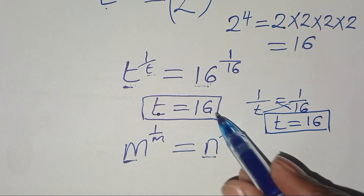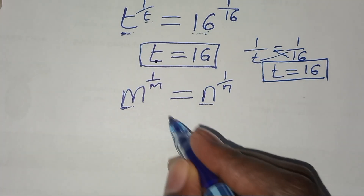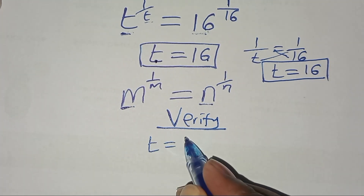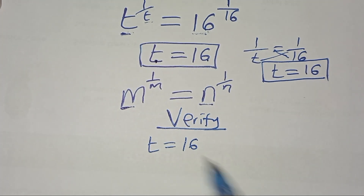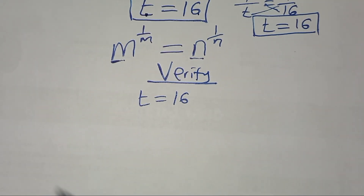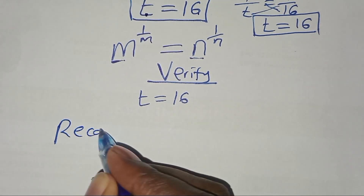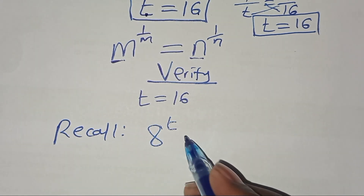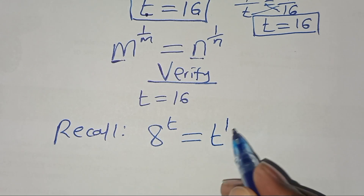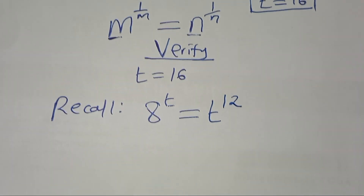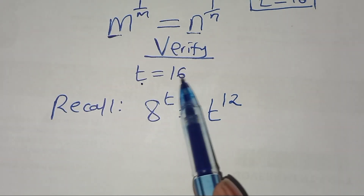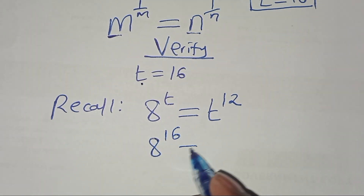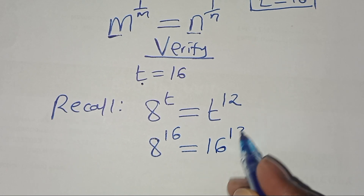So we have the value of t as 16. Let's verify that t equals 16 actually satisfies the original equation. Recalling that 8 to the power t is equal to t to the power 12, and substituting, we get 8 to the power 16 is equal to 16 to the power 12.